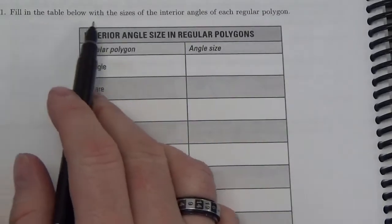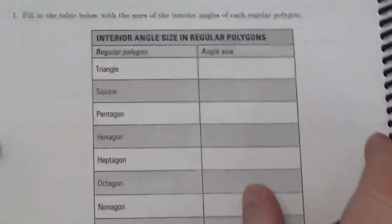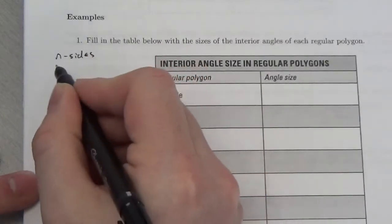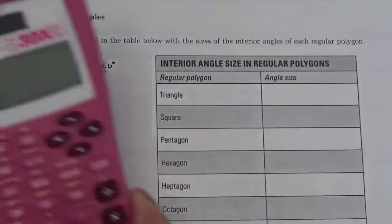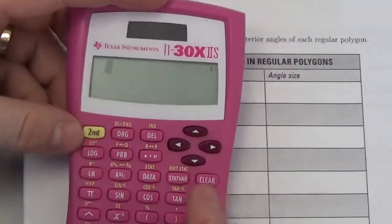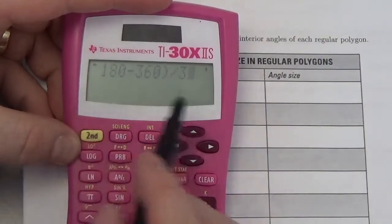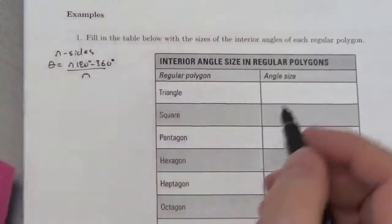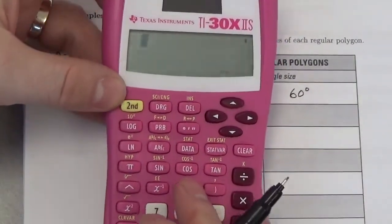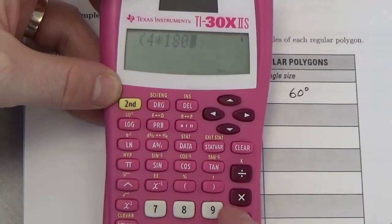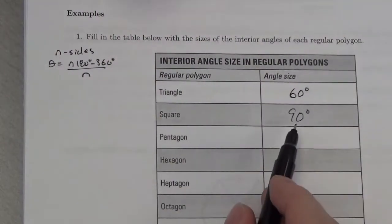In this question it says: Fill in the table below with the sizes of the interior angles for each regular polygon. Remember the formula: if you've got n sides, the angle is going to be n times 180 degrees minus 360 degrees, all over n. For a triangle: 3 times 180 minus 360, divided by 3 — that gives 60 degrees. So each angle in a regular triangle, which would be an equilateral triangle, is 60 degrees. For a square: 4 times 180 minus 360, divided by 4 — and we get 90 degrees, which is exactly what you'd expect.